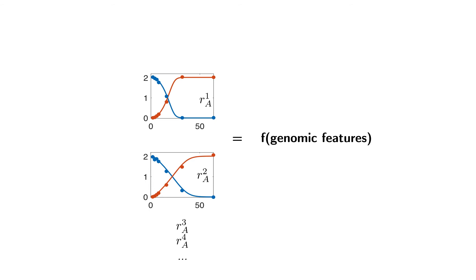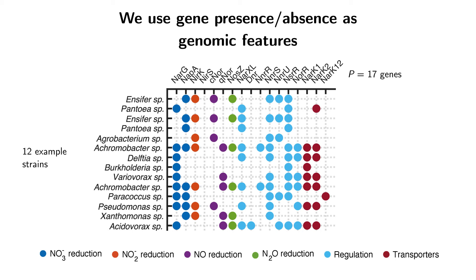Now I can be more concrete about what I mean by genomic features. We use gene presence and absence as genomic features, specifically the presence and absence of genes which are related to denitrification. We've chosen 17 genes, including structural elements, regulators, and transporters, all related to denitrification.